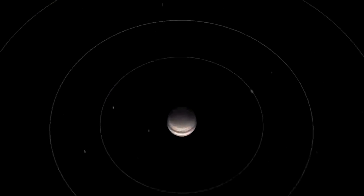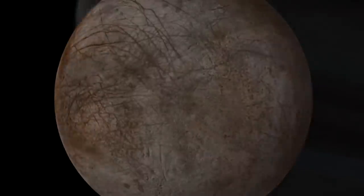While tholins are not found on modern-day Earth, they are rather abundant on icy moons in the outer solar system.